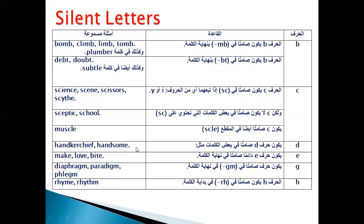نيجي بقى لحرف D. حرف D هنا جاي في نص الكلمة، زي handkerchief, handsome — طبعا ده silent letter. حرف E بيلخبط ناس كتير جدا، makes a lot of mistakes.